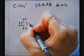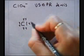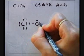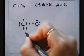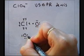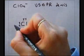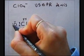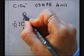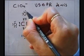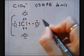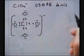Chlorine has seven valence electrons. One Oxygen carries the extra electron, giving it seven electrons. The other three Oxygen atoms each have six valence electrons. We place brackets and the charge on the ion.